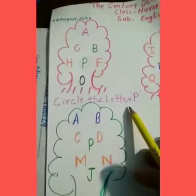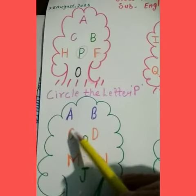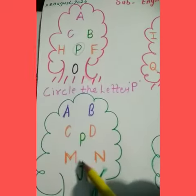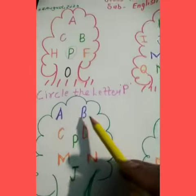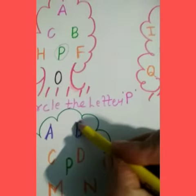Next is circle the letter B. Where is letter B? This one. And we circle the letter B.